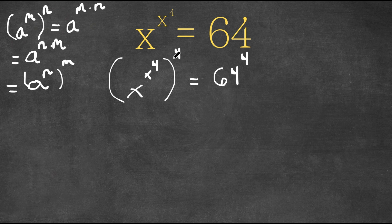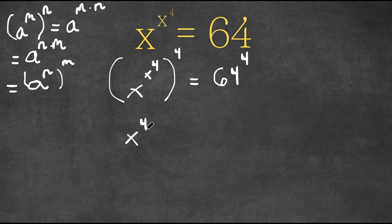So right here, as you can see, we have x to the power of x plus 4 to the power of 4. Think of x to the power of 4 as m and 4 as n. I can actually switch the places of these two, meaning I can rewrite this as x to the power of 4 to the power of x to the power of 4.